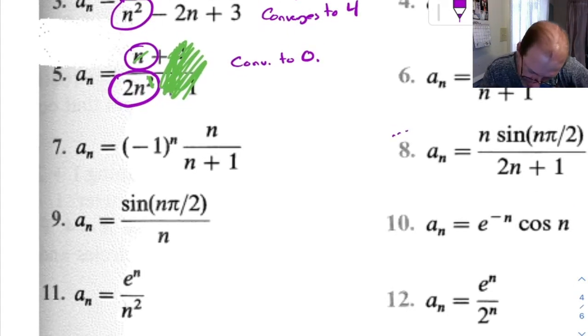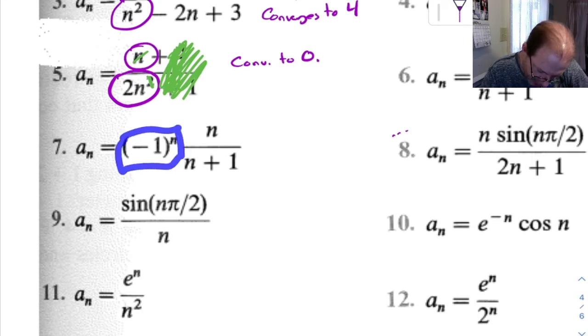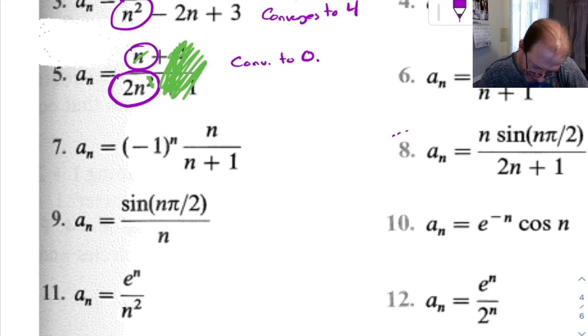Okay, 7. This one's an interesting one because it's got this negative 1 to the n on the front. So how do we deal with that? Well, to begin with, ignore it. We'll pretend it's not there.